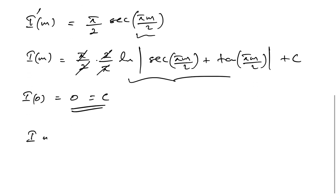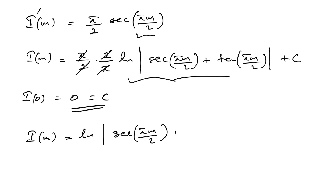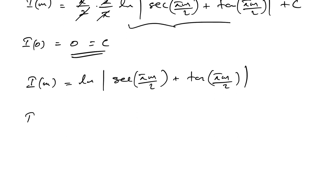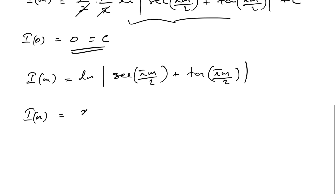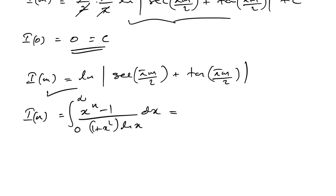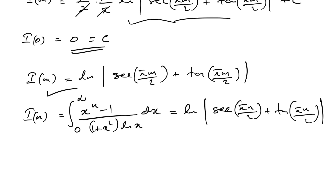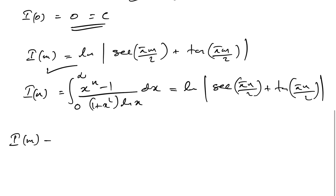Therefore I(m) equals the natural log of secant(pi·m/2) plus tan(pi·m/2). Similarly, I(n) equals the integral from 0 to infinity of x to the n minus 1 over (1 plus x squared) times natural log of x, dx, which equals the natural log of secant(pi·n/2) plus tan(pi·n/2).